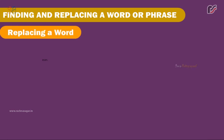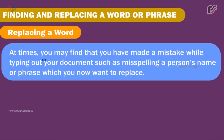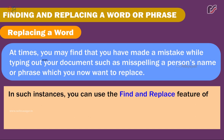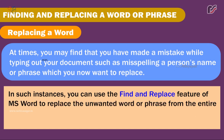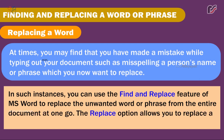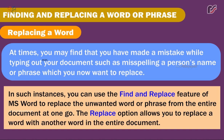Replacing a word. At times, you may find that you have made a mistake while typing your document, such as misspelling a person's name or phrase which you now want to replace. In such instances, you can use the Find and Replace feature of MS Word to replace the unwanted word or phrase from the entire document in one go. The Replace option allows you to replace a word with another word throughout the entire document.